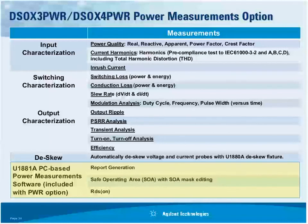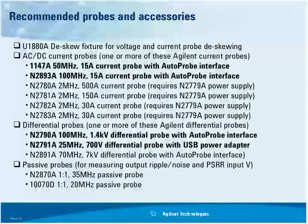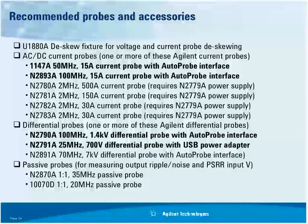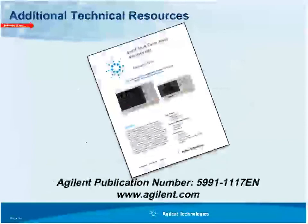One measurement we didn't demonstrate that people consider very important is safe operating area — also available from Agilent with PC-based software included with our solution. The scope and power measurements option is just part of the solution. Power measurements take a lot of specialty probes: current probes and high-voltage differential active probes. The most popular ones used for these measurements are the 1147 50 MHz 15 amp current probe and the 2790 100 MHz 1.4 kilovolt differential active probe. The scope is just half the solution; the other half is probing.